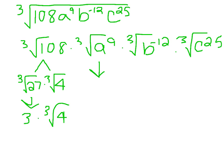Cube root of a to the 9th is a perfect cube, so a to the 3rd. And then cube root of b to the negative 12th can also be simplified into b to the negative 4th. And then for the cube root of c to the 25th, we can do the perfect cube of c to the 24th and then cube root of the remainder c.